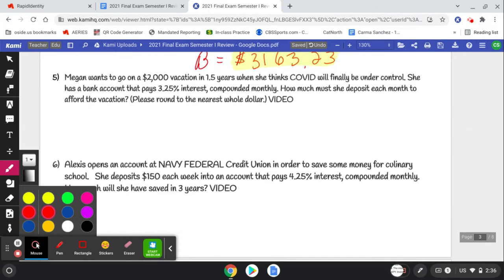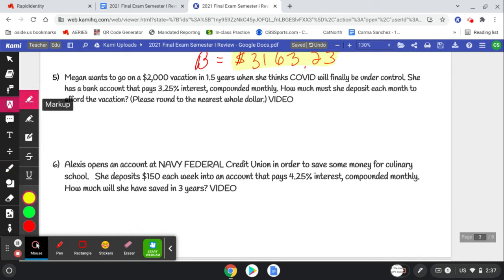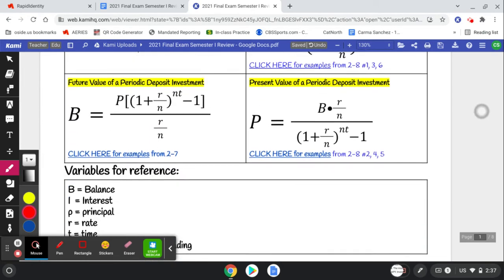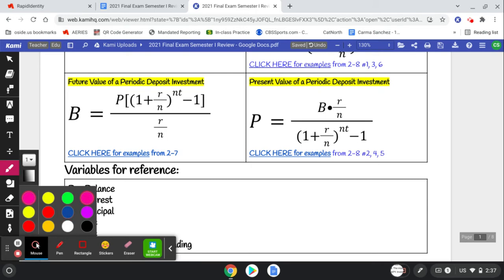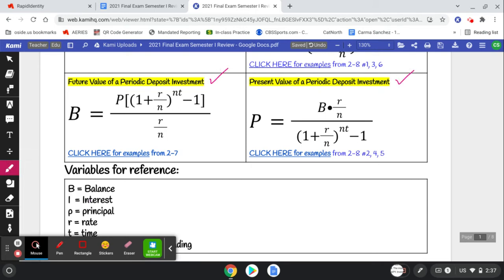Megan wants to go on a $2000 vacation in 1.5 years when she thinks COVID will finally be under control. She has a bank account that pays 3.25% interest compounded monthly. How much must she deposit each month? Here's the keyword: each month. So we're choosing between these bottom two formulas because it said each month, we know it has to be a periodic. We want this one because it tells us how much must she deposit in order to save that future amount.